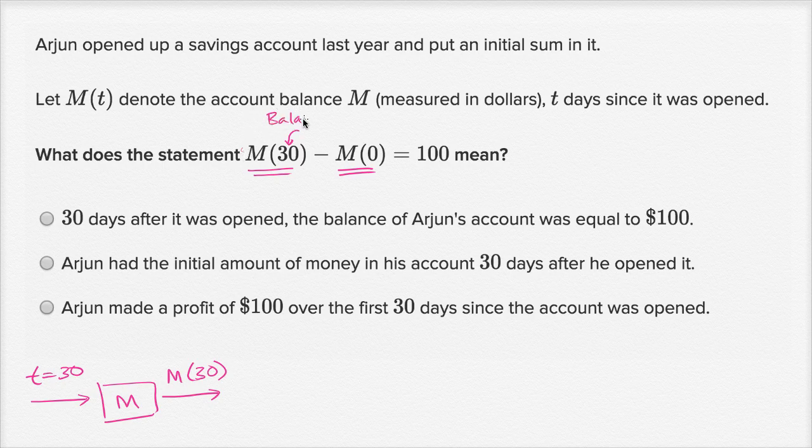So let me write that down. Balance after 30 days. Now by the same logic, this right over here, this is when we set t equals zero. This is the balance after zero days. Or you could say this is the initial balance.